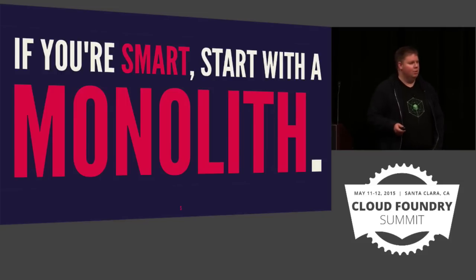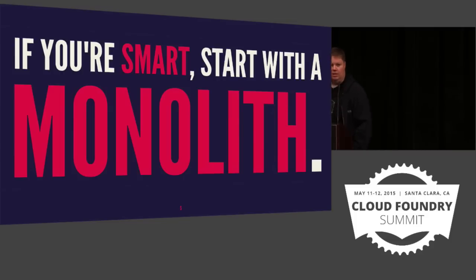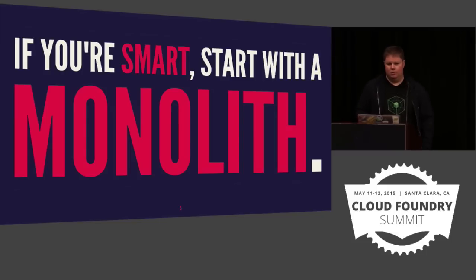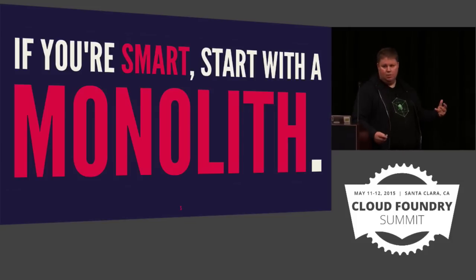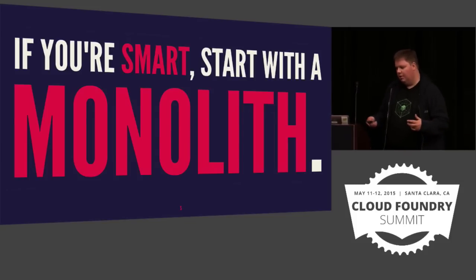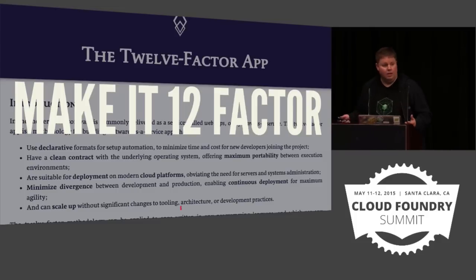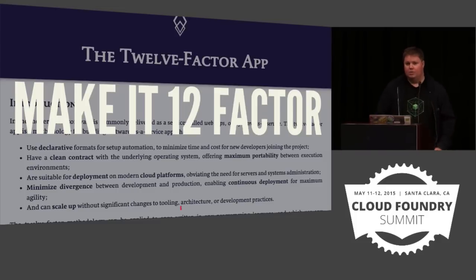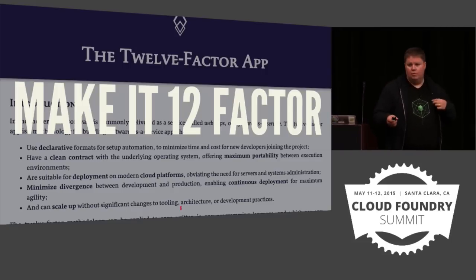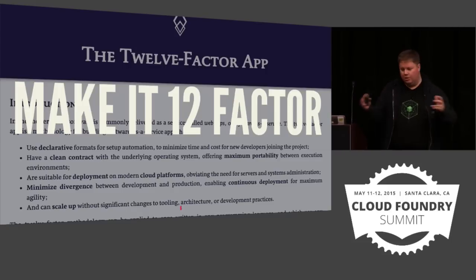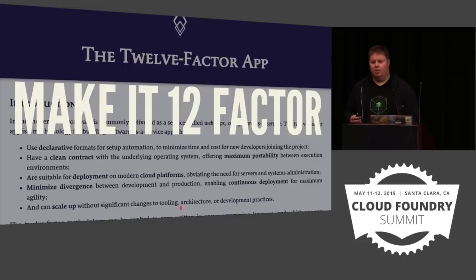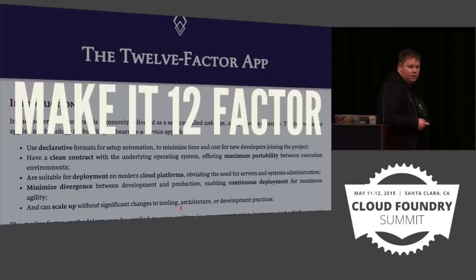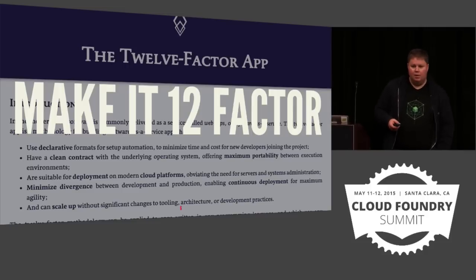You should actually start with a monolith. If I could build everything I wanted as a monolith and do continuous delivery and be agile and innovate and get all that right, I would — because it would be a whole heck of a lot easier than doing microservices. Microservices are hard. Start with a monolith while you're small, while you can. Small team, small monolith — make it 12-factor. It's a lot harder to take something that's big and been around for a long time and turn it into a 12-factor app.